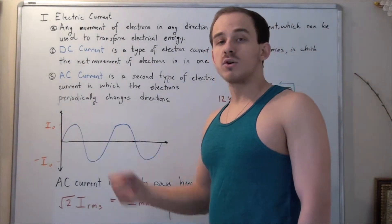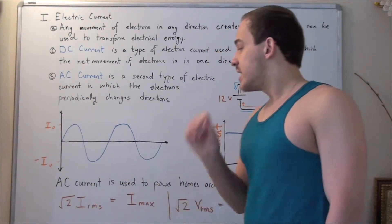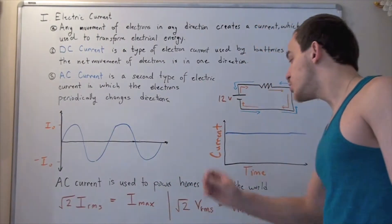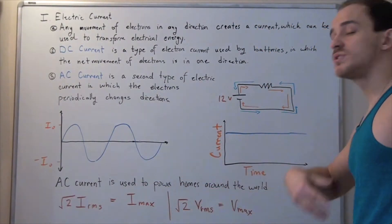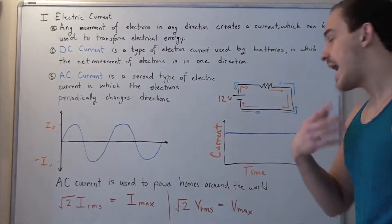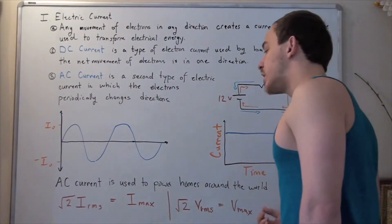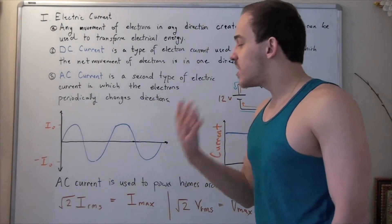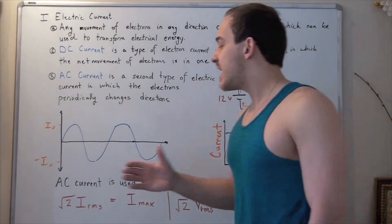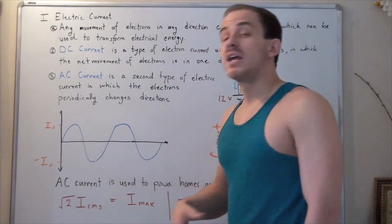AC current is used to power homes, buildings, and houses around the world. So electric companies use AC current.